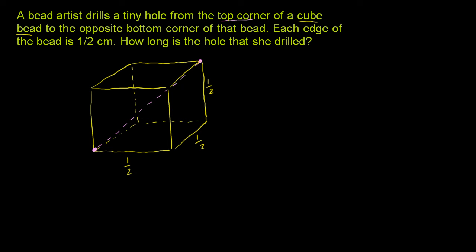How long is the hole that she drilled? That is the distance we have to figure out. This is a bit of a classic in terms of figuring out a distance — the longest diagonal of a cube or some type of rectangular prism. The trick here is to see that this is the hypotenuse of a triangle, and to think about this as the hypotenuse of a right triangle, you have to visualize the diagonal of the bottom face of this cube.